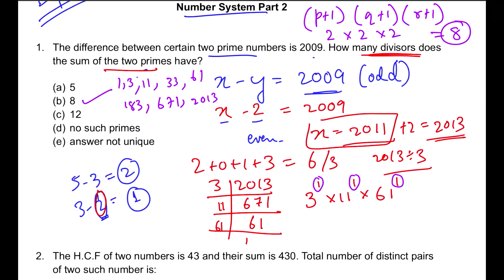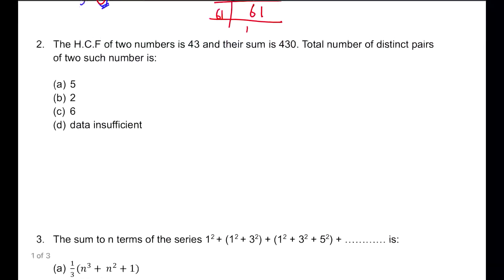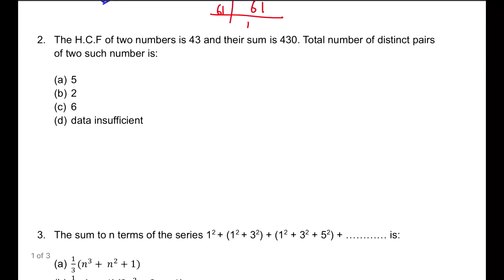So this is how you do the first question. Three concepts: first, your common sense of 2; second, your sum of this part; then finding out the prime factorization; then finding out the total factors. Let's go to the second question. I hope you will pause the screen and try on your own.